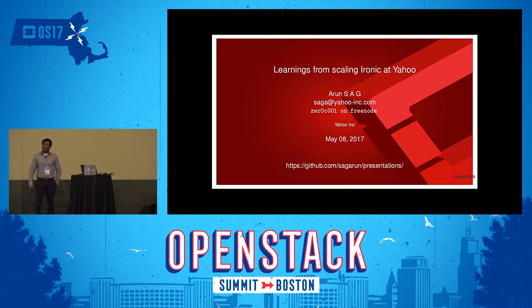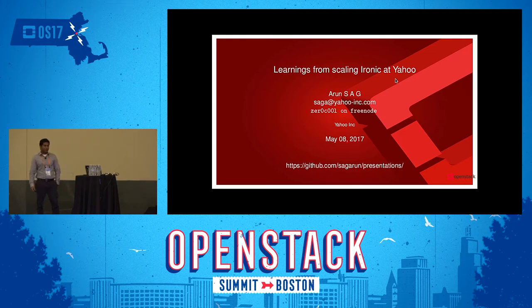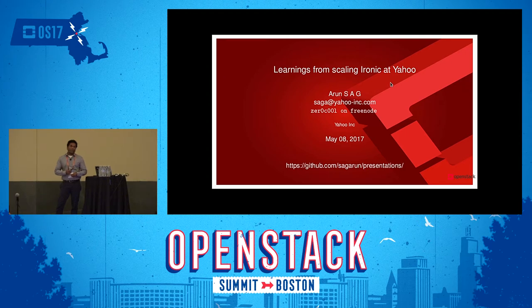My talk has four parts. First part is on our cluster architecture and background. Second part is on Ironic and Ironic conductor. Third, we'll discuss about Neutron and Neutron DHCP agent issues. Fourth, we'll discuss about the importance of doing a density test. Finally, there will be time for questions. Please feel free to ask any questions in the middle.